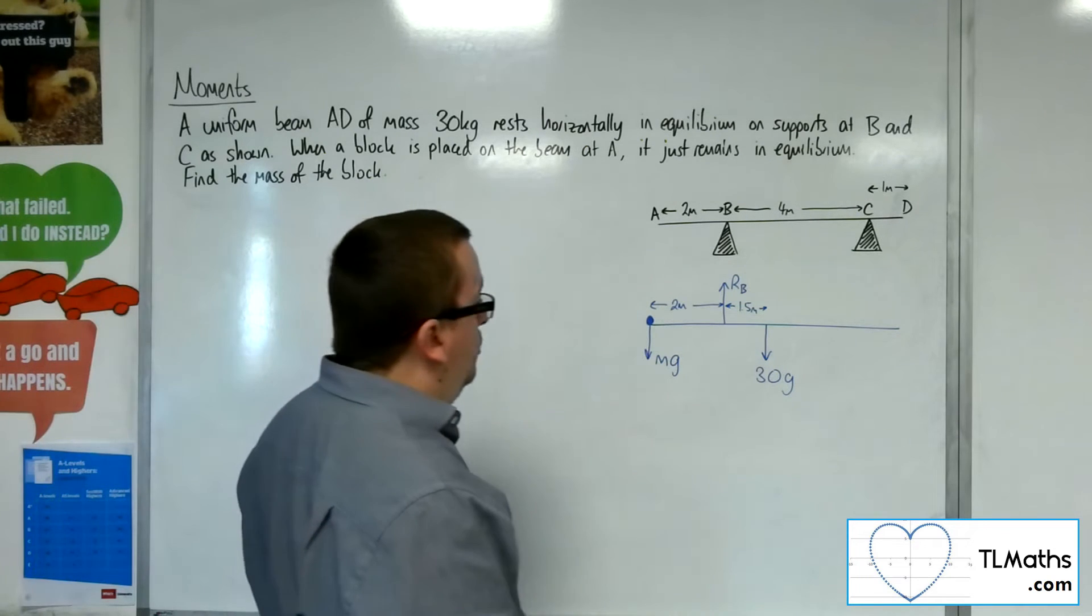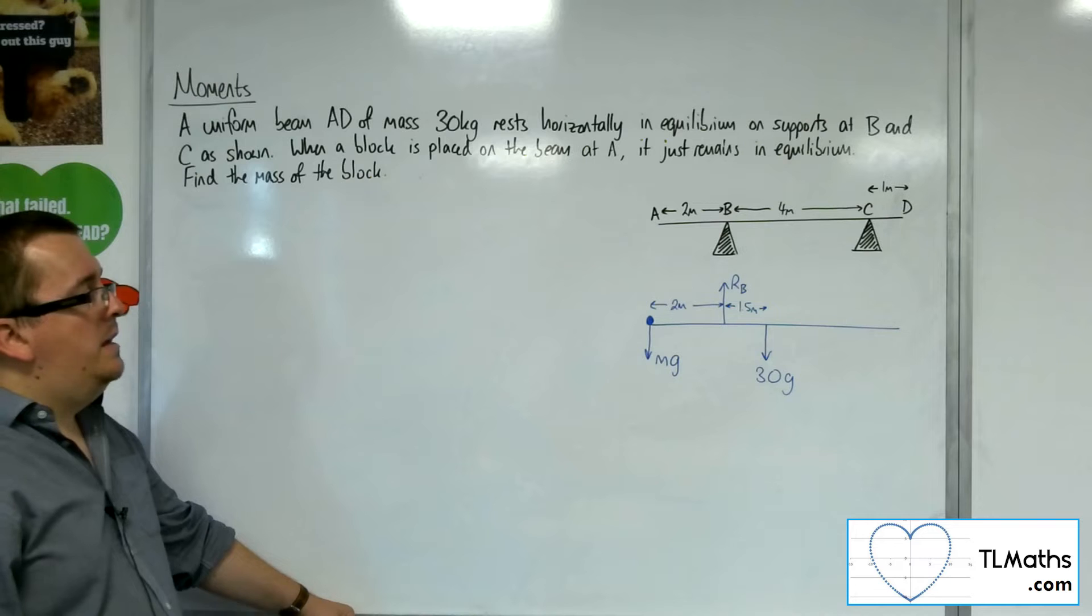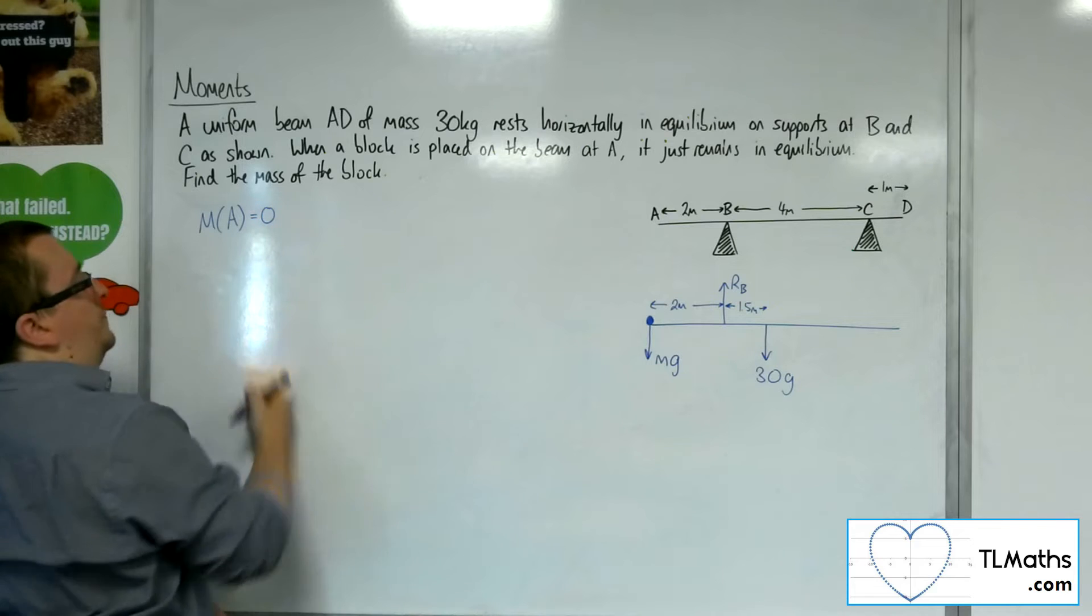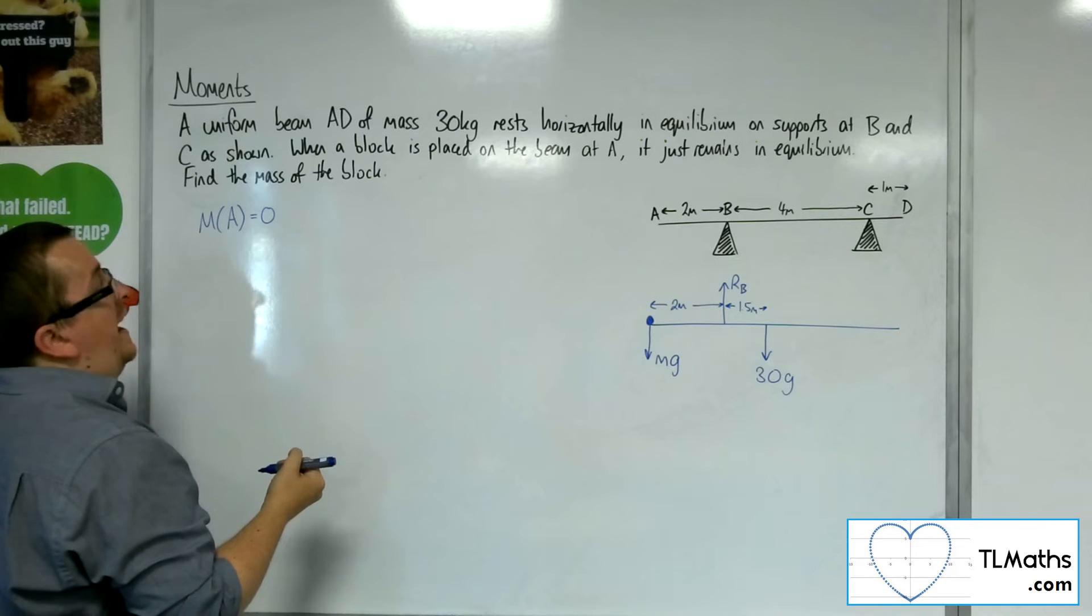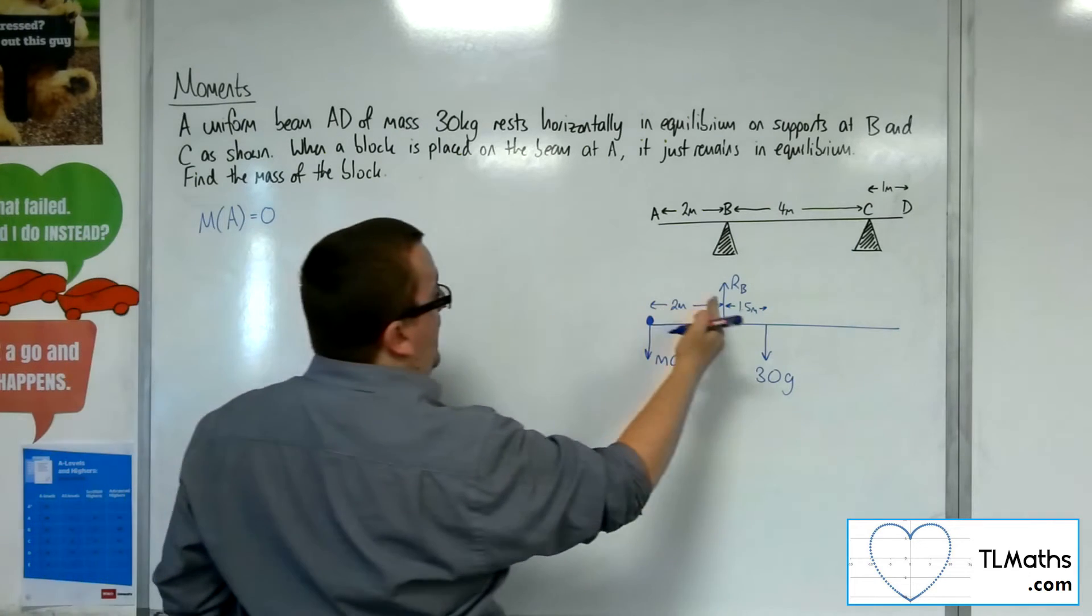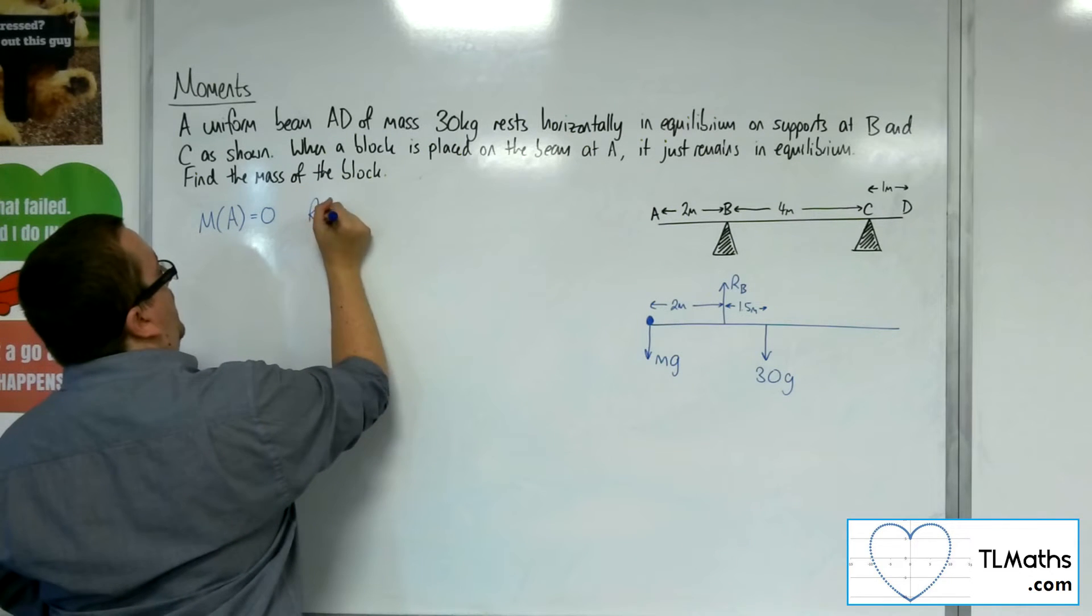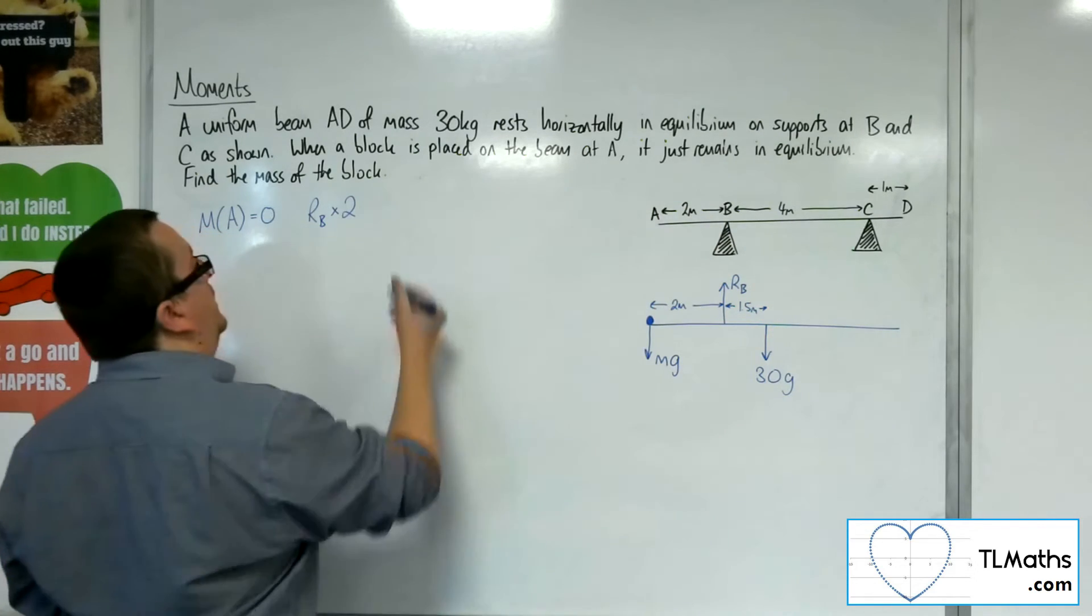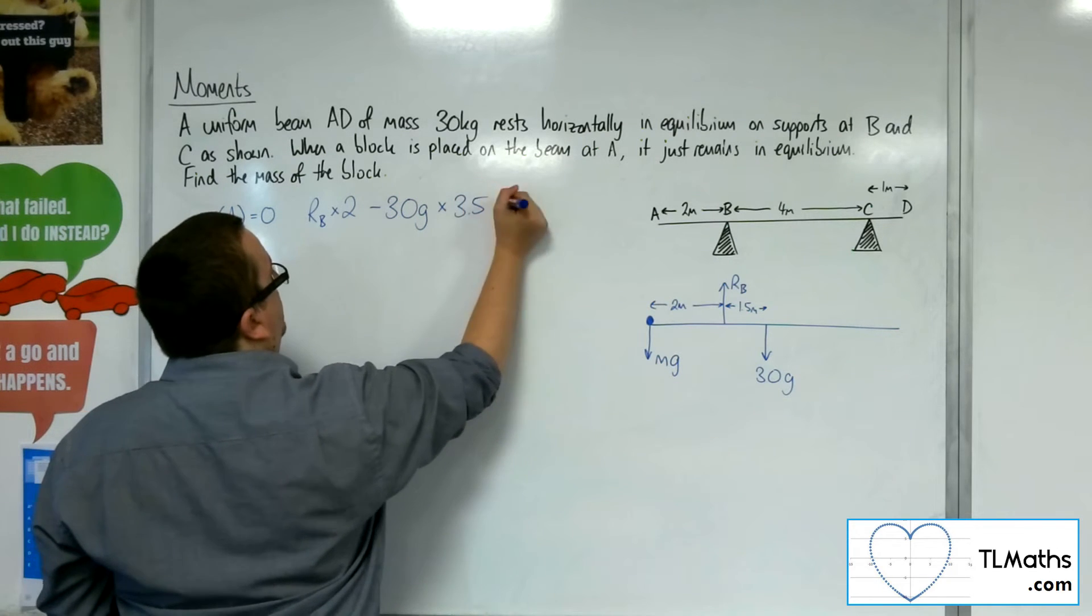So you can see that we've got two unknowns here, M and RB. If I take moments about point A, then I'll be able to set up an equation that gets me RB. So I'm going to have the normal reaction force here going anticlockwise, so that'll be positive, so RB times by 2. And then I've got the 30g, that's going clockwise, so that's negative. So take away 30g times 3 and a half metres equals zero.